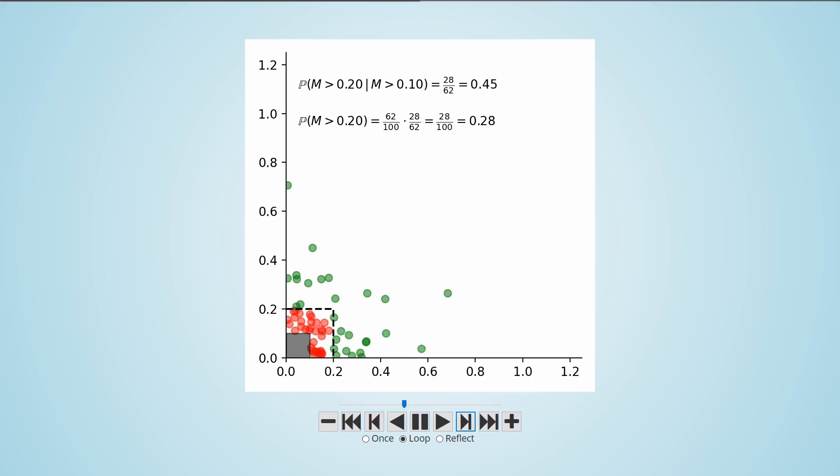Now, if we throw away those red points which didn't make it over our first threshold, we have a sample of X1 and X2 conditioned on their maximum being larger than 0.1. Then, with the remaining 62 points, we can look at a slightly better threshold of 0.2. Again, Crude Monte Carlo lets us estimate the probability of M exceeding 0.2 when conditioned on exceeding 0.1. And this is the fraction of green points divided by the total number of points, 62, giving about a 45% probability estimate.